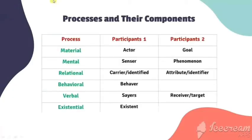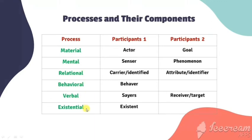Here is the table of process and their components. There are six processes in clause as representation: material, mental, relational, behavioral, verbal, and existential process. Each type of process has its own name for participants.